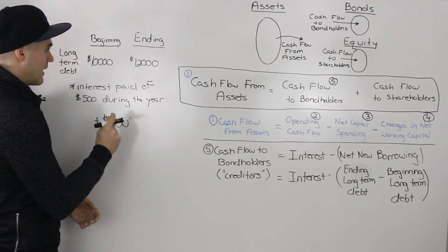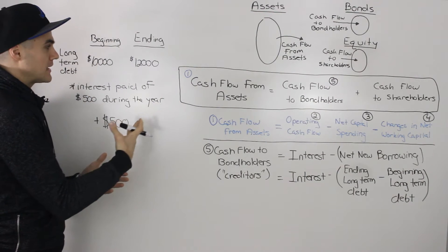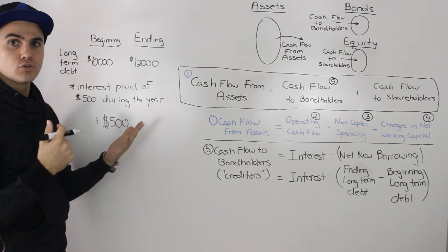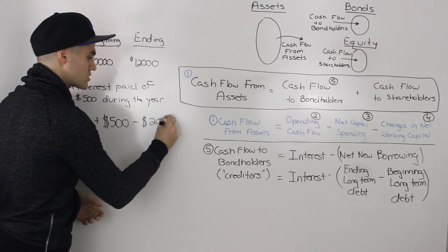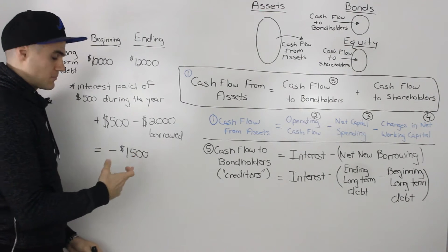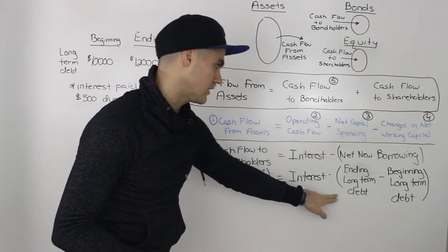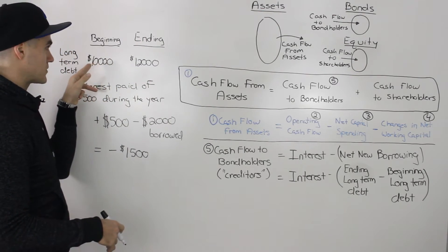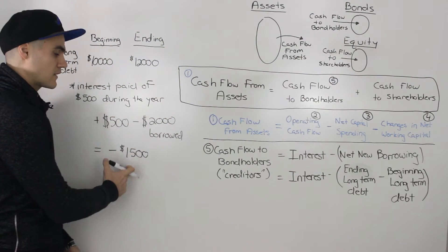That $500 is a positive cash inflow. But notice how the long-term debt went up on the company's balance sheet, meaning they borrowed an extra $2,000 from you. Since they borrowed it from you, you had to give that money — that was an outflow, a negative number. So overall, the cash flow to you as the bondholder was negative $1,500. Using the formula: $500 minus ($12,000 − $10,000) = $500 − $2,000 = negative $1,500.